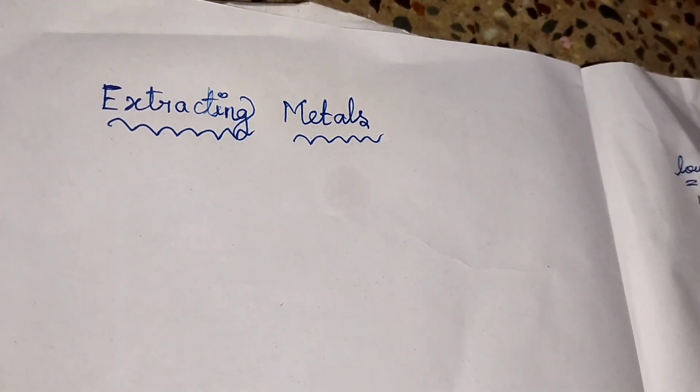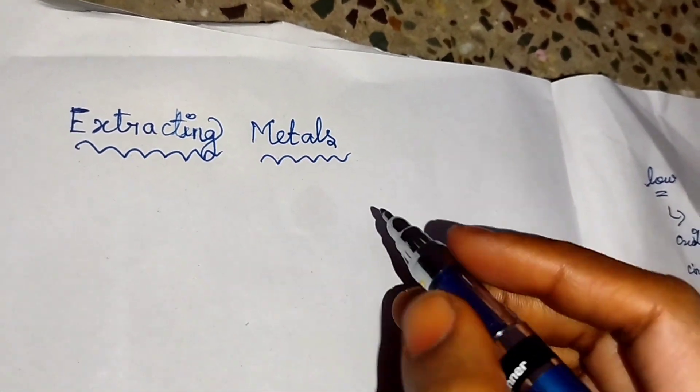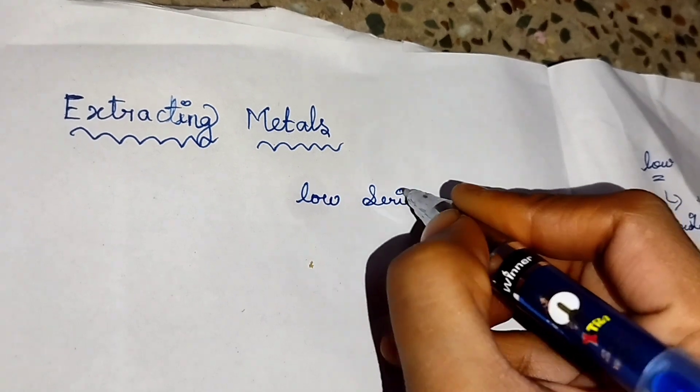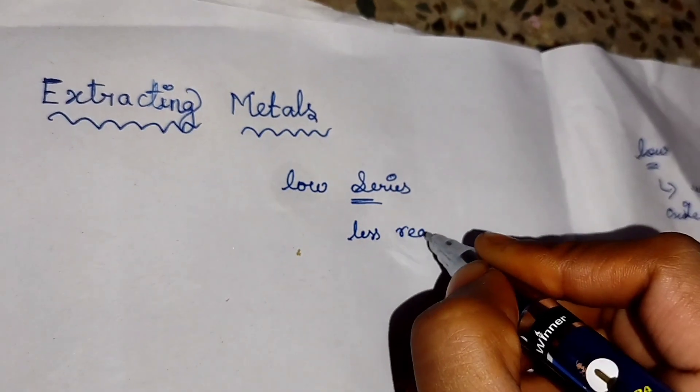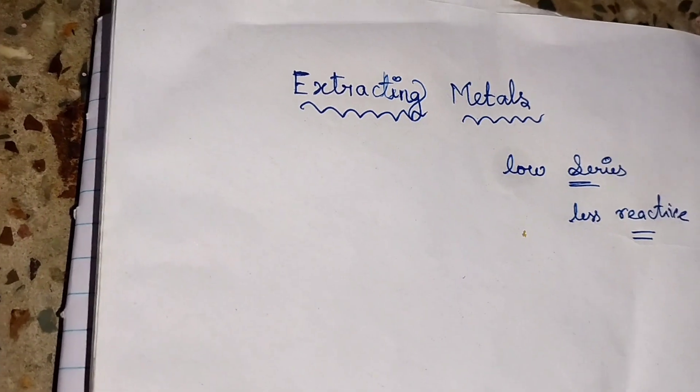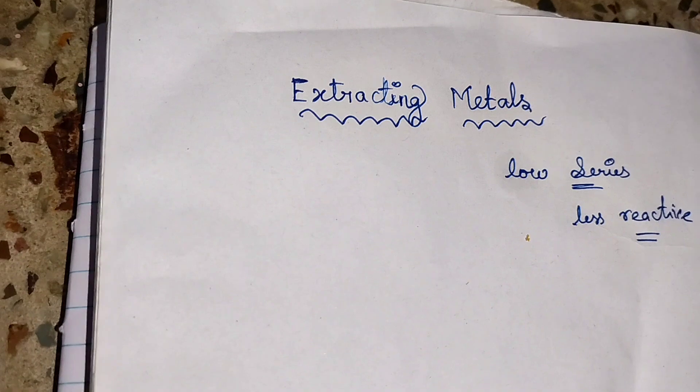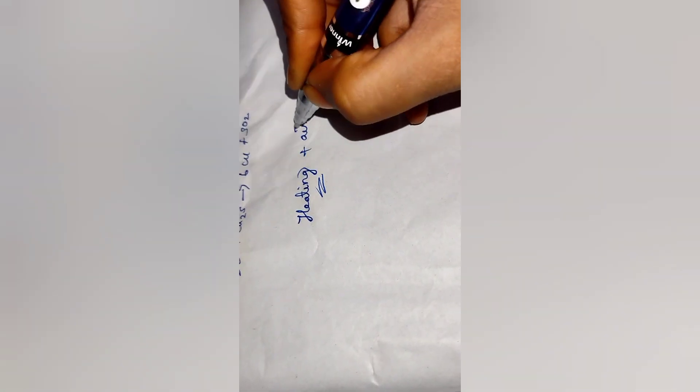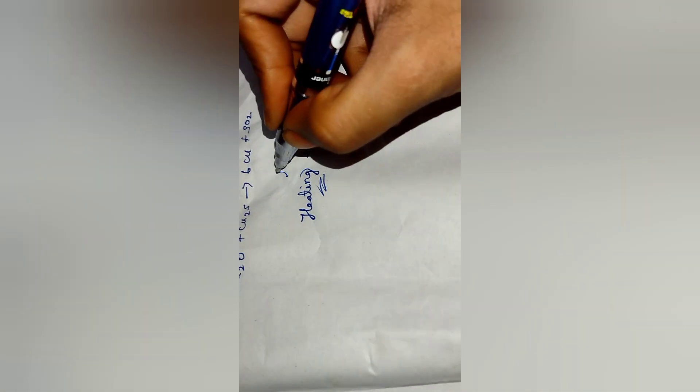Today's topic is extracting metals. We are going to extract metals present in the low reactivity series. These metals are less reactive or unreactive. We will extract them from their ores - specifically from their sulfide and oxide forms. These metals can be reduced directly by heating in the presence of air. This is the procedure for less reactive metals.